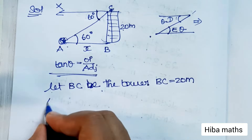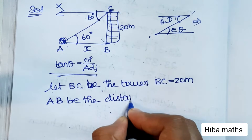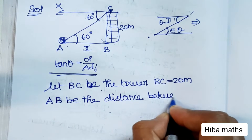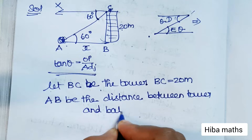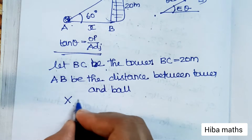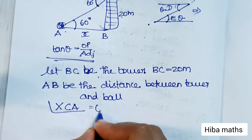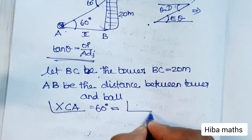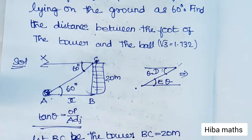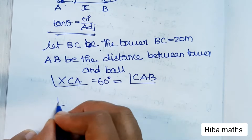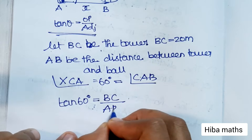AB is the distance between the tower and the ball. The angle of depression is 60 degrees, and this is equal to angle CAB. Since the 60 degree angle is equal, we apply tan. Tan 60 degrees equals opposite BC over adjacent AB.